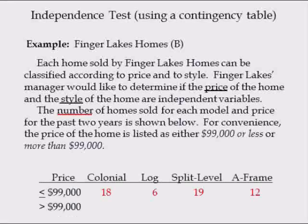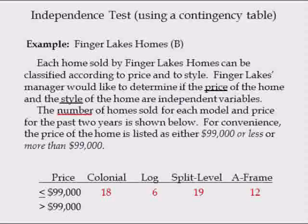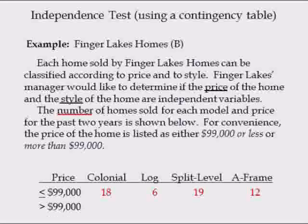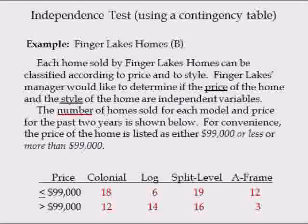The observed frequencies for homes selling for $99,000 or less are as follows: Finger Lakes Homes sold 18 Colonial Homes, 6 Log Homes, 19 Split Level Homes, and 12 A-Frame Homes. The observed frequencies for homes selling for more than $99,000 are: 12 Colonial Homes, 14 Log Homes, 16 Split Level Homes, and 3 A-Frame Homes.